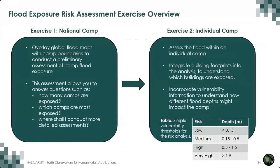The hands-on exercise will consist of two exercises. The first exercise will be conducting a national-level refugee camp flood exposure assessment by overlaying global flood maps with camp boundaries. This assessment will allow us to answer questions such as: how many camps are exposed, which camps are most exposed, and where should we conduct more detailed assessments? In the second exercise, we'll carry out a more detailed assessment in a single camp, incorporating building footprint data to understand which buildings are exposed within the camp, and vulnerability information to understand how different flood depths might impact different buildings. This table shows the vulnerability information we'll incorporate, where different flood depths are classified into four different risk categories ranging from low to very high.